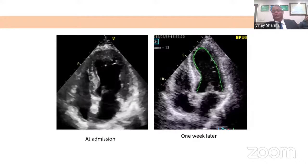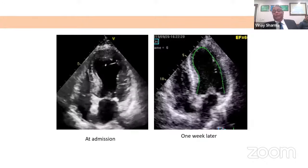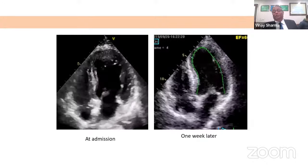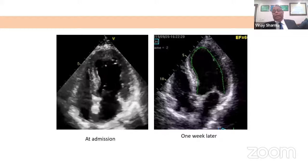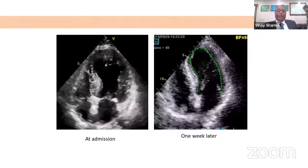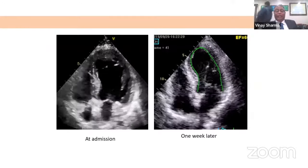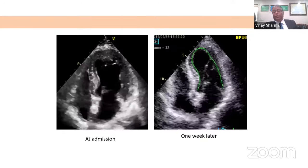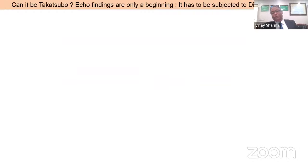If you remember, Takotsubo has been defined as a transient heart failure syndrome. The question that naturally arises is: can this be called Takotsubo syndrome? Prima facie, yes — but echo findings are only a beginning. The diagnosis has to withstand some kind of diagnostic criteria before we can say the patient has Takotsubo syndrome.